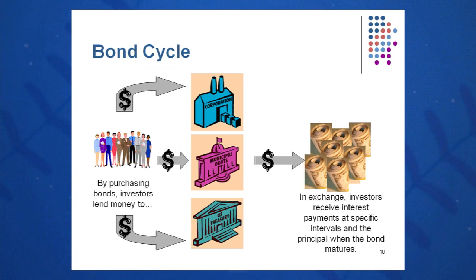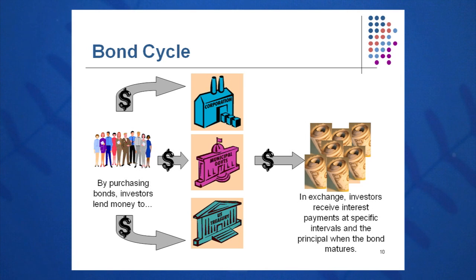Essentially here's the bond cycle: when bonds are issued by corporations, municipal governments, and the Treasury Department, we invest money in those organizations, and eventually we get our principal back at the end of the period when the bond matures, while getting interest all the while. The primary issuers of bonds are corporations, the federal government, and municipal governments.